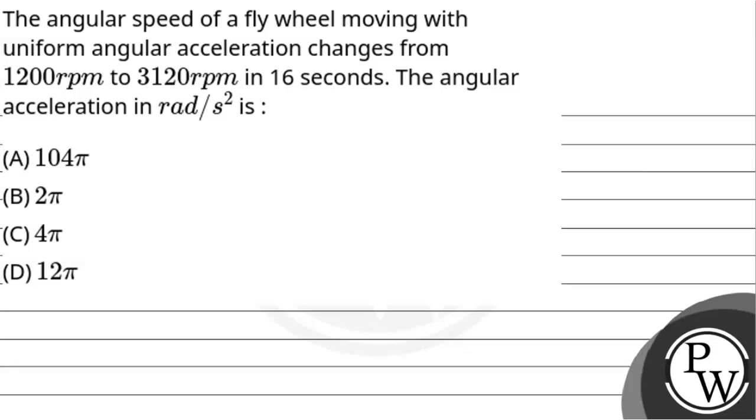Hello, let's get started with the question. The angular speed of a flywheel moving with uniform angular acceleration changes from 1200 rpm to 3120 rpm in 16 seconds. Find the angular acceleration in radians per second squared.